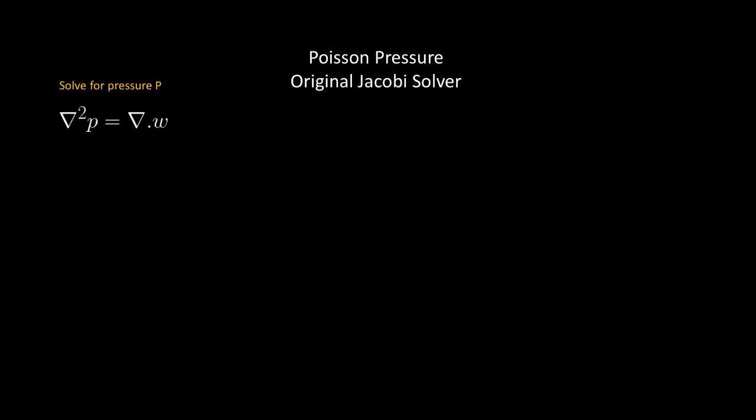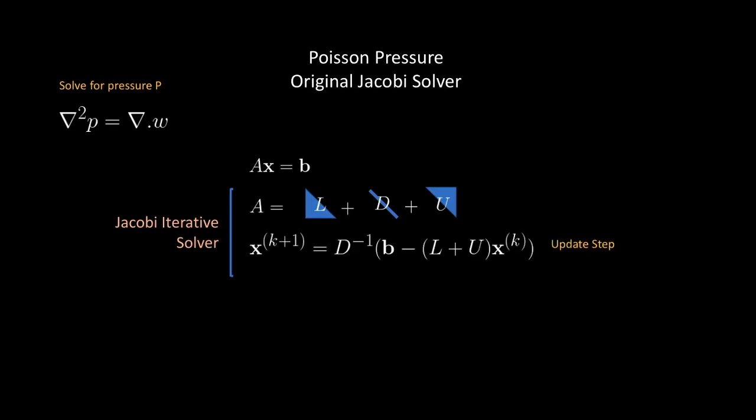To solve the Poisson-pressure equation using the Jacobi solver, we form a linear system Ax equals b, then decompose A into lower and upper triangles and a diagonal matrix, and then iteratively get better estimates for the unknown x through this updated step. The benefit of this approach is that we don't have to explicitly compute the inverse of the Laplacian. Also Jacobi is highly parallelizable and hence GPU-friendly.